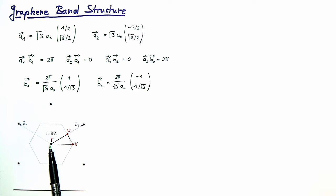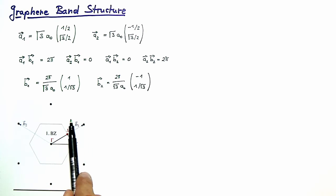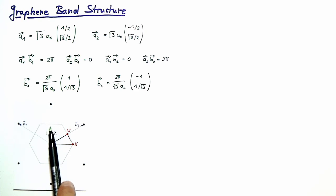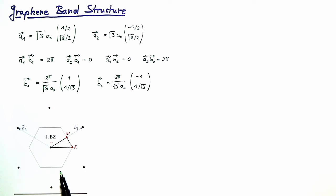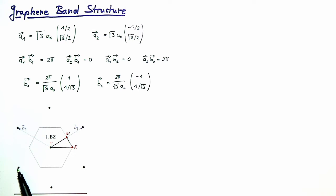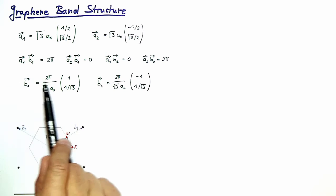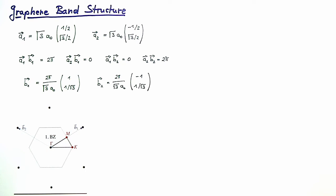Other points of the reciprocal lattice not given by just the two primitive vectors are found by linear combinations. For example, taking the sum b1 + b2 brings us to this reciprocal lattice point. Similarly, b1 − b2 gives this point and −b1 + b2 gives another. In this way you can form all kinds of linear combinations to get a two-dimensional reciprocal lattice.